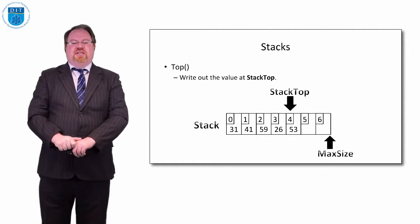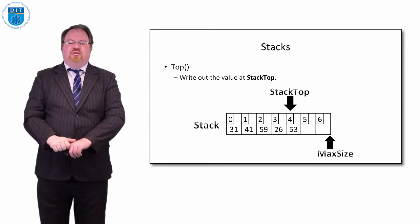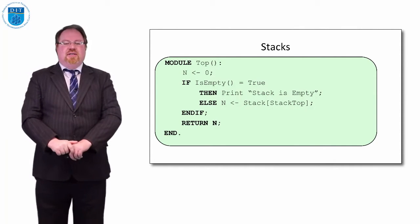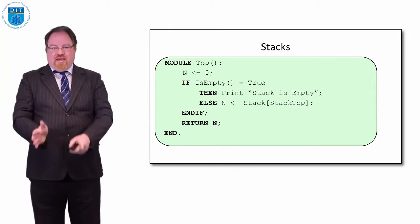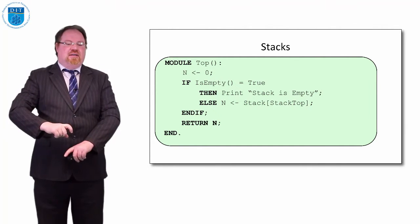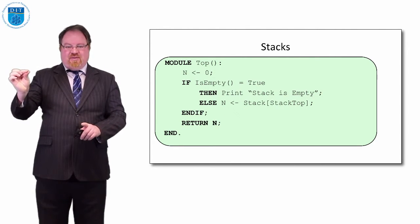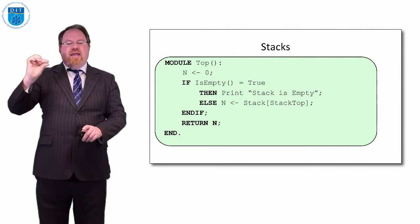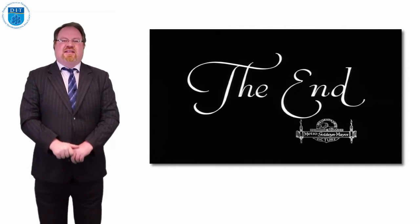If we want to do the top operation — which says tell me what value is on top of the stack — it's exactly like pop except we don't decrement the counter. We don't move stack top down by one at all. We create a variable n, set it to zero. If the stack is empty, we print stack is empty. Otherwise, we write the value currently pointed to by stack top into n and return n, but we don't decrement the counter because we're just looking at the stack. So top means tell me the top value; pop means tell me the top value and remove it from the stack. That's it for stacks — thanks very much, we'll see you in the next episode.